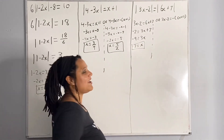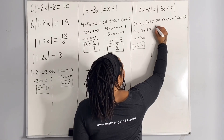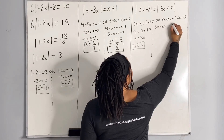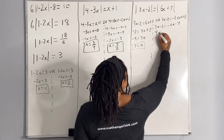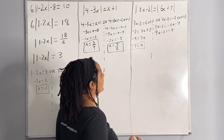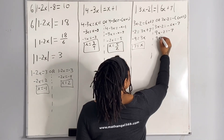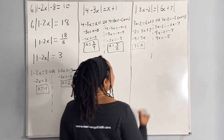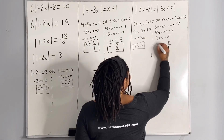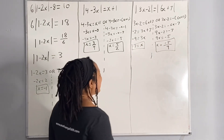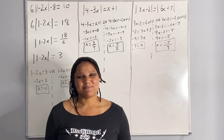Now let's compute the second one. Distributing the negative sign, we get 3x minus 2 is equal to negative 6x minus 7. Adding 6x to both sides, we get 9x minus 2 is equal to negative 7. Adding 2 to both sides, we get 9x is equal to negative 5. Dividing both sides by 9, we get x is equal to negative 5 over 9. And that is how you solve equations when given an absolute value.